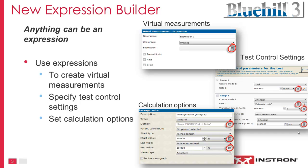Another place where this expression ability helps is test control settings. For example, if you have different ramps in your test — ramping up, then holding, then ramping down — many of the parameters you define can now be not only numbers but expressions. You can really embed a lot of logic into the way you are handling your ramps.